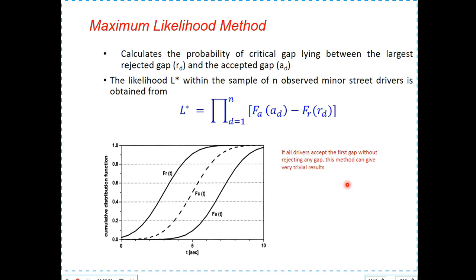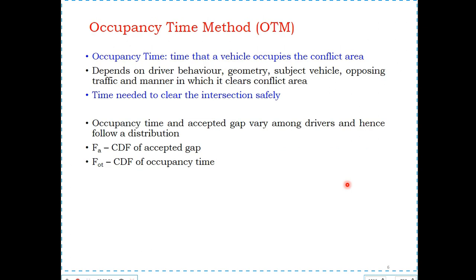During field studies at intersections in India, it was observed that drivers do not follow a well-defined path while entering or completing a maneuver. They generally try to use the first gap or the lag available when they reach the stop line. Priorities are not fully respected, and sometimes minor street vehicles force their entry into the intersection area, resulting in slowing down of vehicles on the major street. Vehicles generally clear the intersection in a zigzag manner. Therefore, it was thought that the manner in which a driver clears the intersection is more important than the rejected gap.